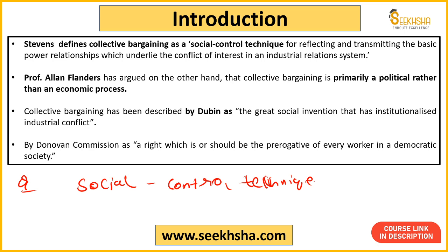First, Stevens says collective bargaining is a social control technique. There is a power relationship between employer and worker, and because of this power relationship all conflict of interest arises. So the method of collective bargaining is a social control technique through which conflict in this power relationship can be minimized.